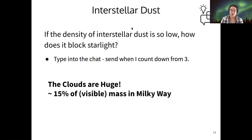The clouds are huge. So interstellar dust and gas is about 15% of the visible mass in the Milky Way. There's a lot of dark matter. Actually, most of it is dark matter. We'll talk about that next week. But that's the reason that something so low density can block our sight.